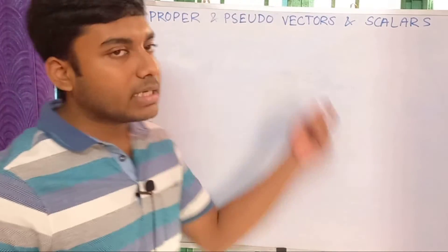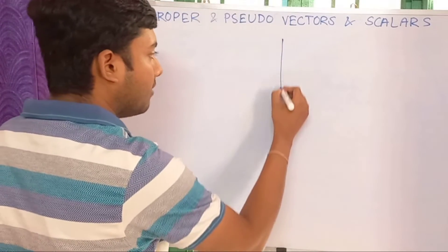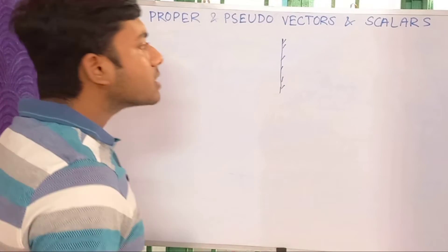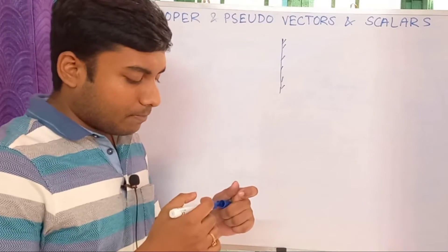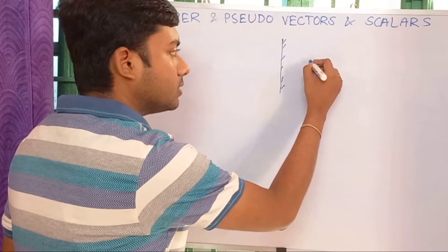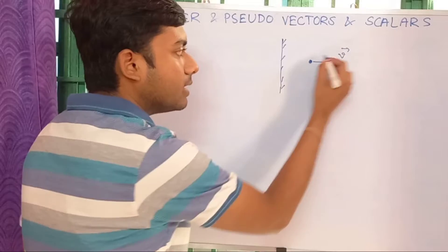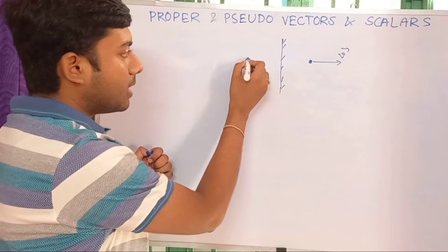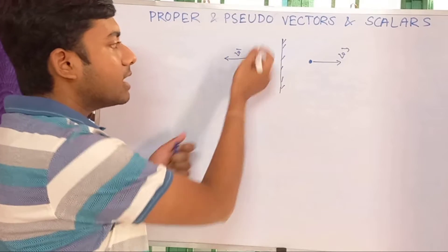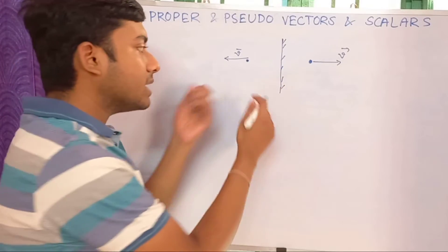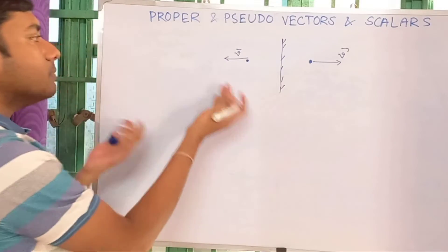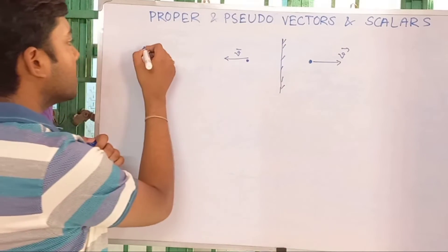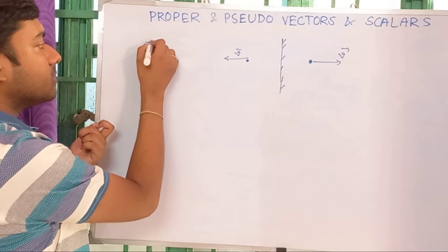To understand what is a proper vector and pseudo vector, let us use a mirror. Suppose we have a particle situated here and moving with velocity V. Then the mirror image of this — by our intuition, the particle will go in this way. That means the V vector after mirror reflection is becoming minus V.